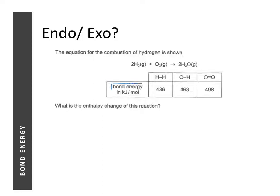To determine whether a reaction is endo or exo, we need to know something called bond energy. Bond energy means the amount of energy required to break a particular bond. For example, to break a hydrogen–hydrogen bond it requires 436 kJ per mole. To break one mole of an oxygen–oxygen double bond it requires 498 kJ. Bond energy also tells us the energy released when a bond is formed — it has the same value but the opposite sign. So when an O=O double bond is formed, it releases 498 kJ per mole.